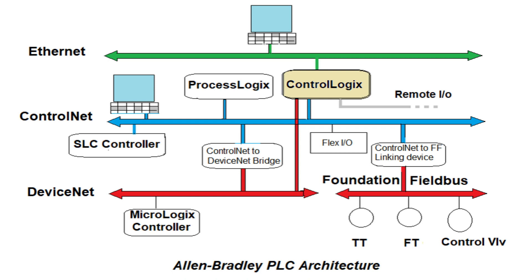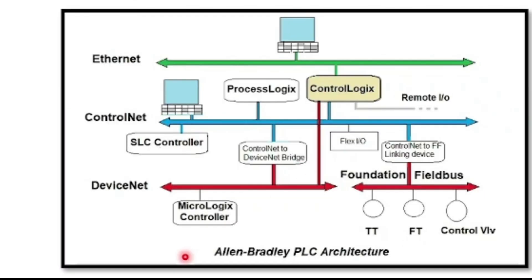ControlLogix can control process logic, drive motion controls, or any other type of requirement. It is a flexible platform that allows multiple processors, networks, and IOs to be mixed without restrictions. For smaller requirements this architecture works well, but if the requirement grows, we can use a NetLinx architecture for control information.